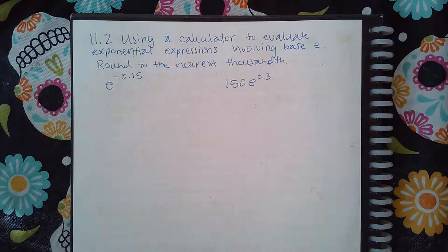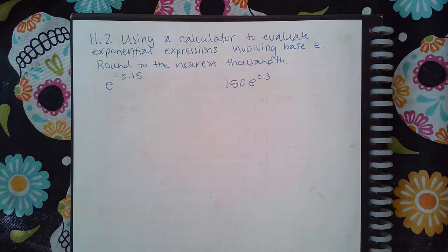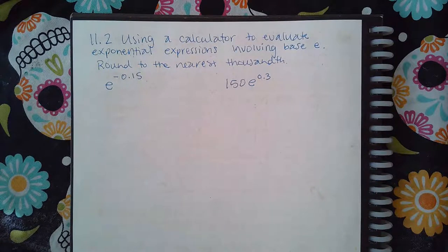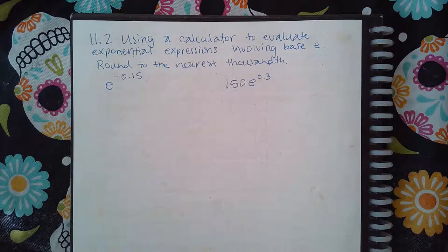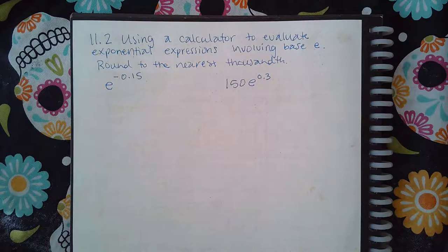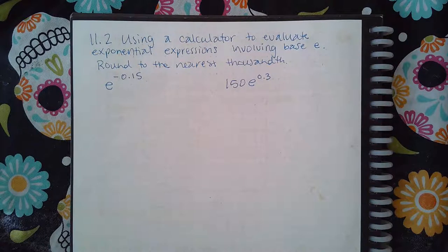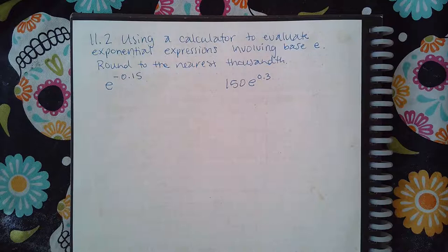Now, just like pi, E is a natural number. It's a phenomenal number that happens in nature, and that's why they call it a natural number. It's the natural exponential.